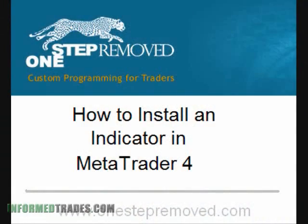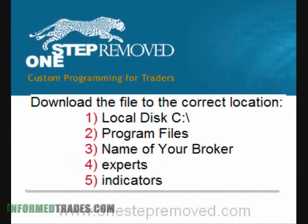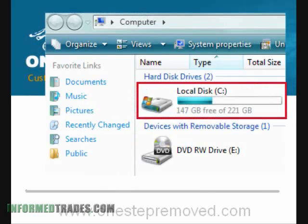This is Sean Overton with OneStepRemove.com. In this video, we'll discuss how to install an indicator in MetaTrader 4. The video assumes that you already have an indicator downloaded, or that you've located one on a website and you're just wondering where to put it. So you know in advance where we're going, the entire hierarchy of where to save the indicator file is: C drive, Program Files, name of your broker, Experts, and then Indicators. We'll go through this step by step so you can visualize the process.